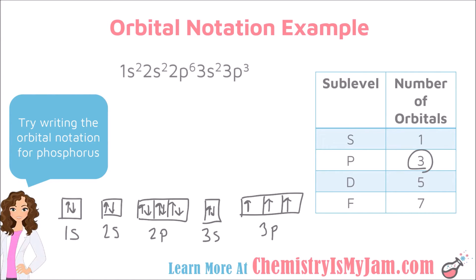That is the correct way to write the orbital notation for phosphorus in the ground state. If I had written up, down, up, I would have violated Hund's Rule, and that would be an incorrect answer.